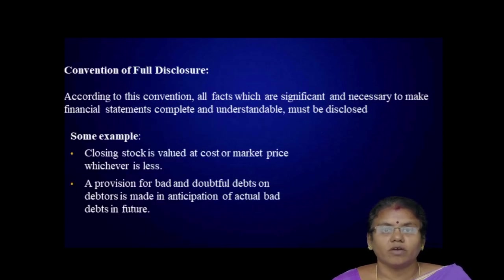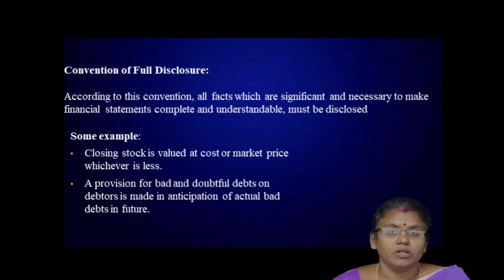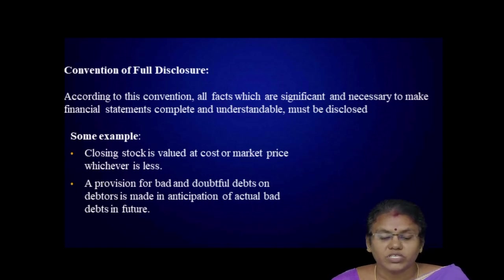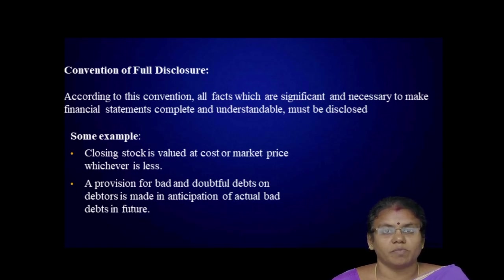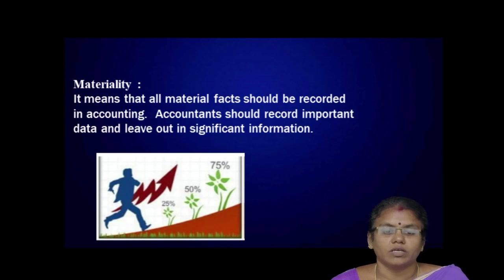Third, convention of full disclosure: all facts which are significant and necessary to make financial statements complete and understandable must be disclosed — for example, closing stock is valued at cost or market price, whichever is less, and a provision for bad and doubtful debts is made in anticipation of actual bad debts. Fourth, materiality: all material facts should be recorded in accounting. The accountant should record important data and not leave out significant information. Thank you all.